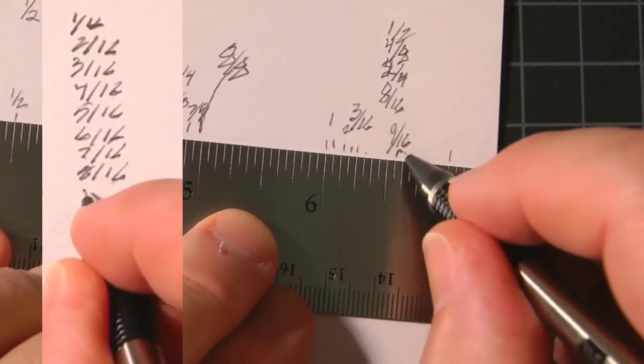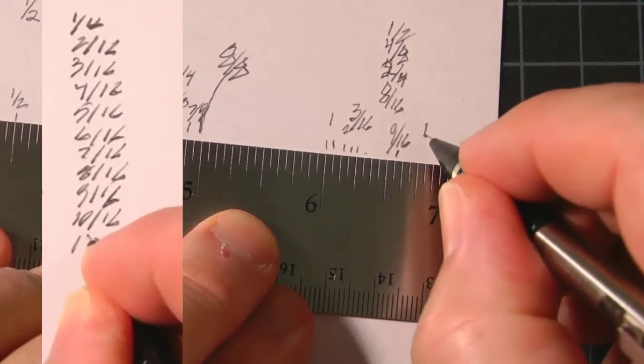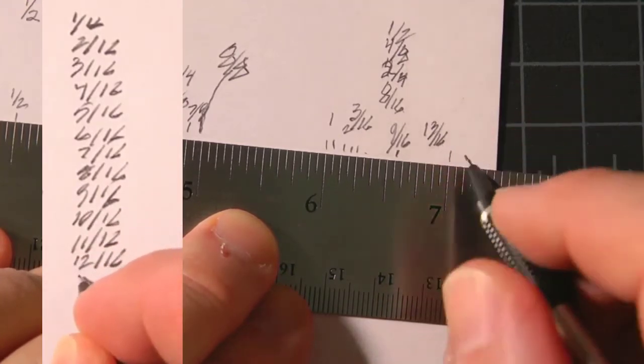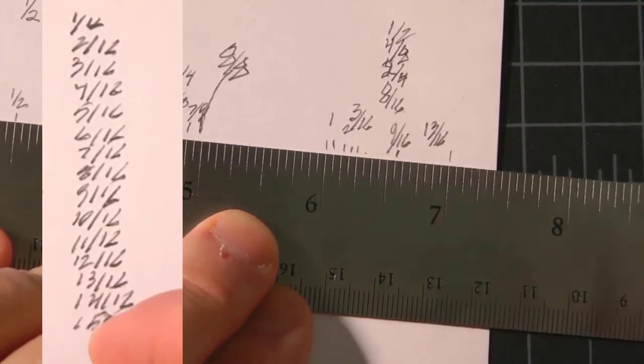I'll catch up. So there's nine sixteenths, ten, eleven, twelve, thirteen sixteenths, and so forth until we get, let's see, thirteen, fourteen, fifteen, sixteen sixteenths.